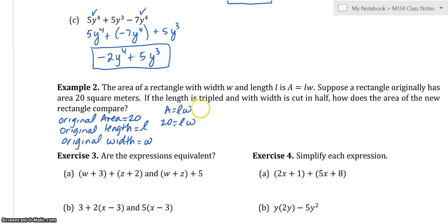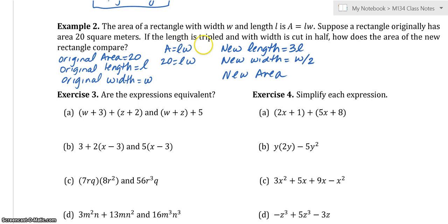Then I ask if the length is tripled. So now we're talking about a new area with the width cut in half. So if the length is tripled, the new length would be 3 times the original. The width cut in half, the new width would be the original divided by 2. So how does the area of the new rectangle compare? So what is the new area? So I'm still going to say it's length times width, but it's this new length times this new width.